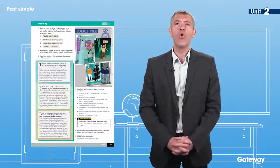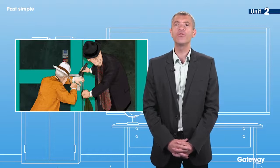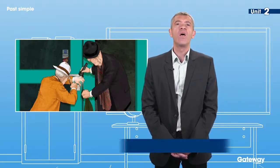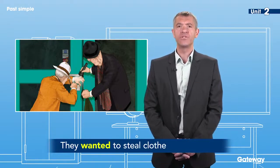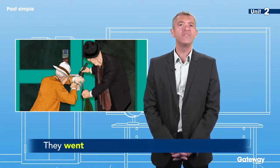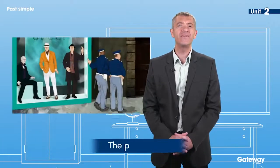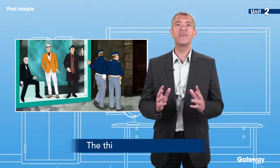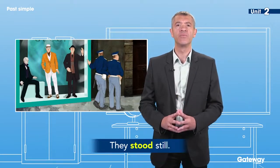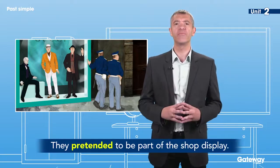For example, the one about the two Italian criminals, Tommaso Bonardi and Vittorio Laudani. They wanted to steal clothes from a shop. They went into the shop in the middle of the night. The police came. The thieves didn't run away — they stood still. They pretended to be part of the shop display.